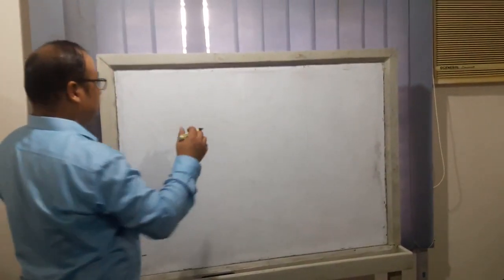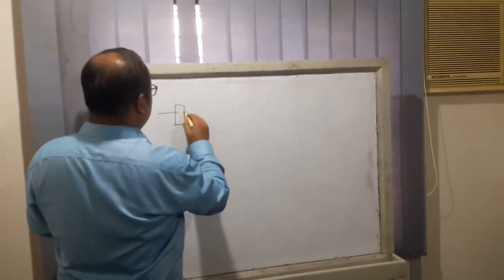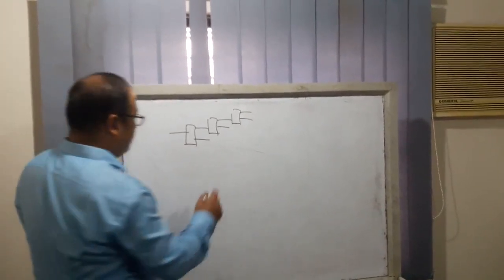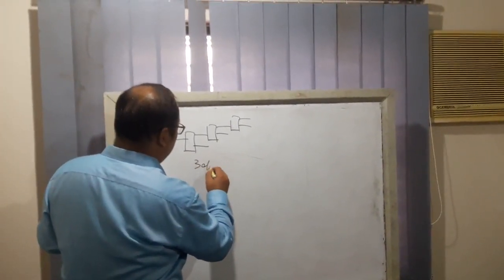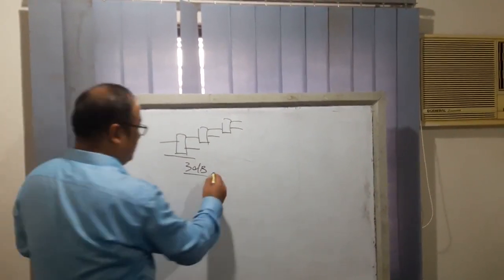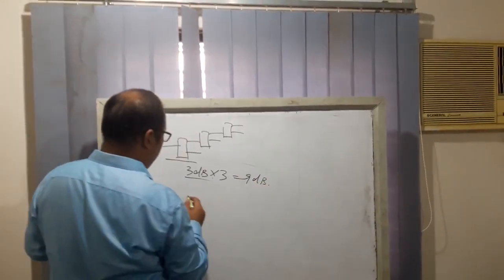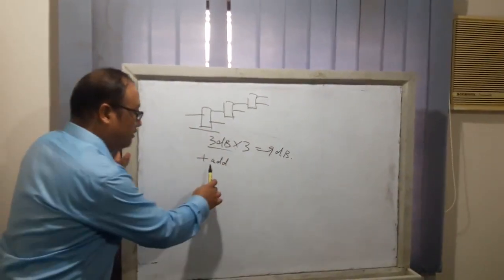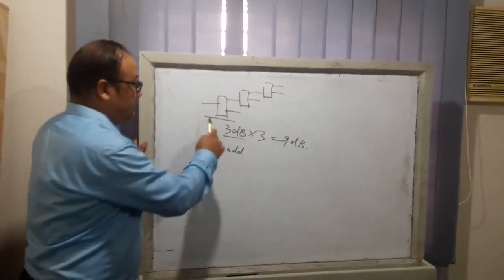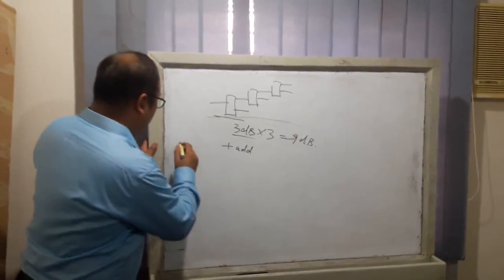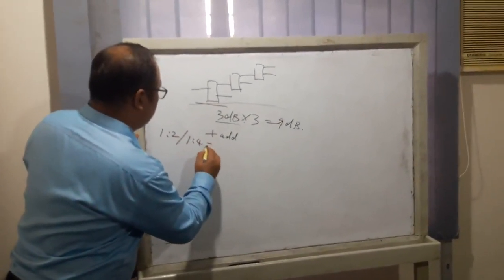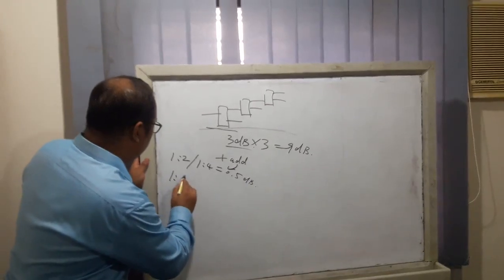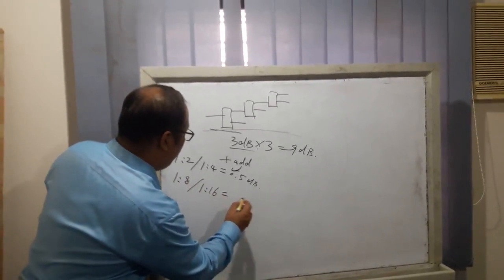The same measure for 1 to 8, it's just 3 stage. The attenuation is about 3 dB, the basic attenuation of 1 to 2, times 3 equals 9 dB. And plus additional attenuation. Pay attention, additional attenuation will get higher if the splitter ratio gets higher. For example, 1 to 2, then 1 to 4, the additional attenuation is about 0.5 dB, and 1 to 8 or 1 to 16 is about 1 dB.